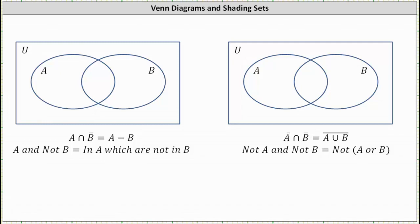First, on the left we have A intersect B complement, which is equivalent to A minus B. A intersect B complement is the set of elements that are in A and not in B. A minus B is the set of elements that are in A which are not in B, which is equivalent.